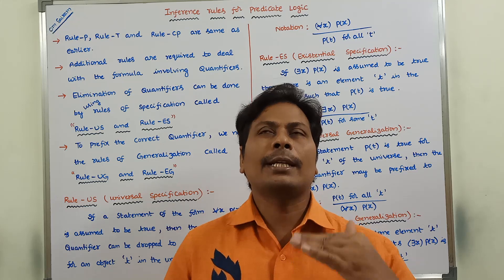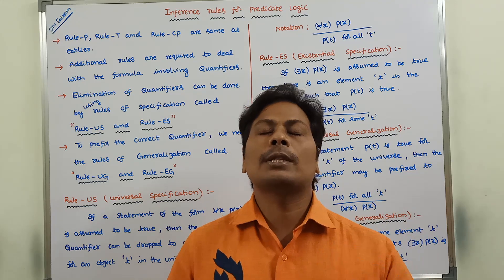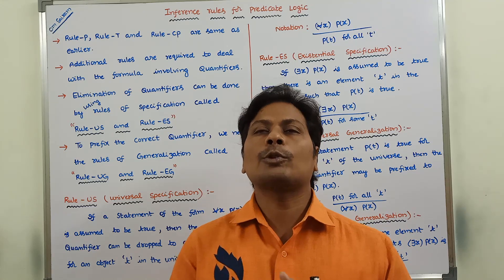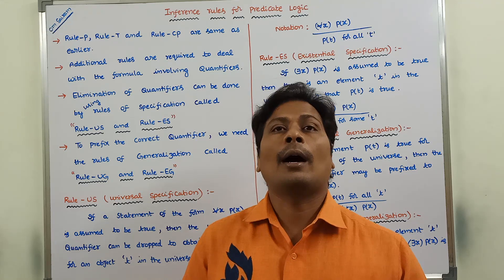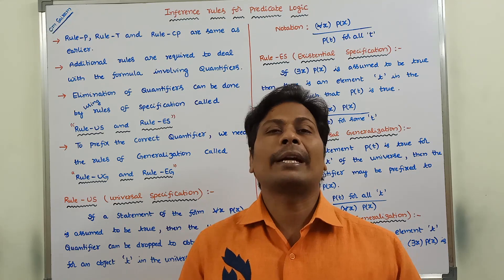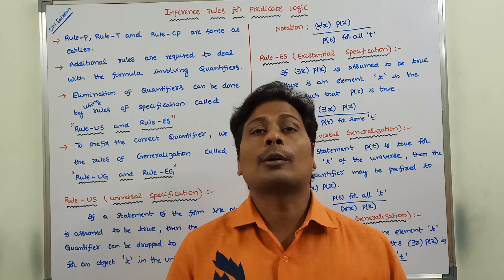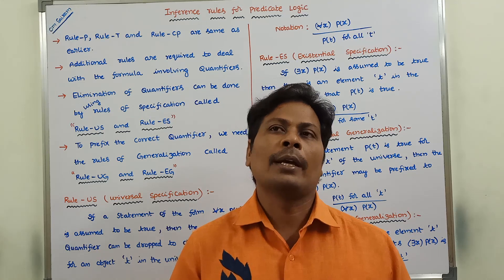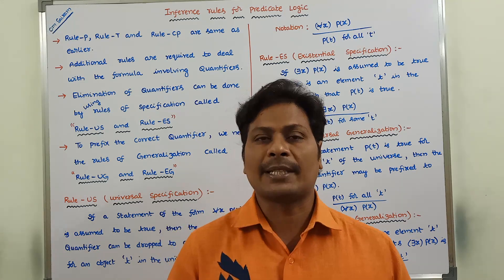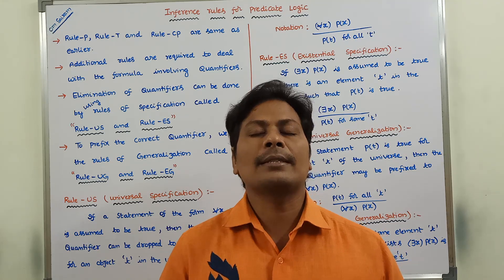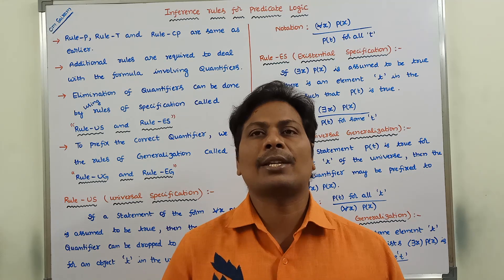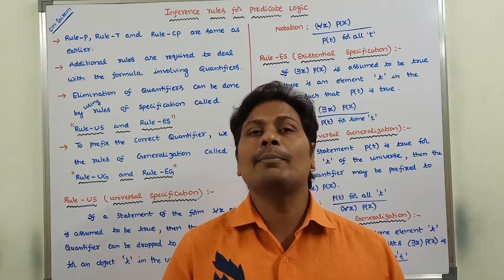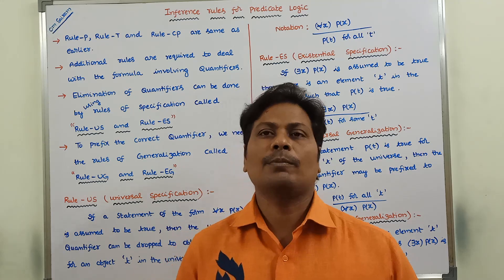In addition to the three rules used in propositional logic — rule P, rule T, and rule CP — we have to use some more inference rules in predicate logic: rule US, rule ES, rule UG, and rule EG. Rule US means universal specification, rule ES means existential specification, rule UG means universal generalization, and rule EG means existential generalization.